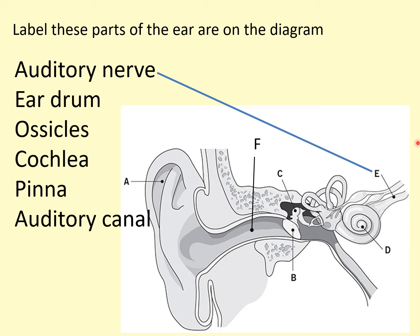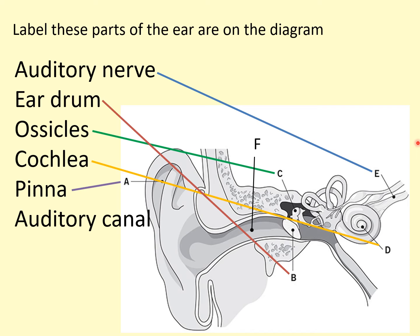Letter E is the auditory nerve. We'll do all the labels and then I'll talk you through what their function is. The eardrum is B, C is the ossicles, the cochlea is D, pinna is A, and the auditory canal is F.